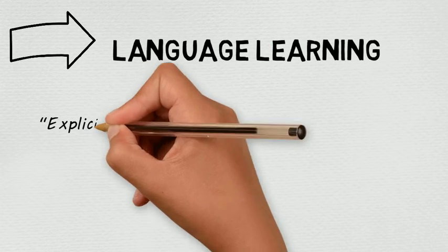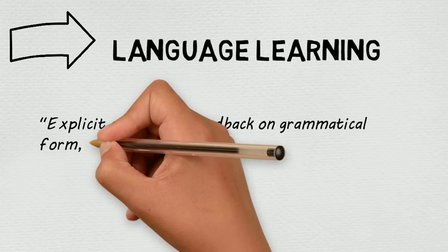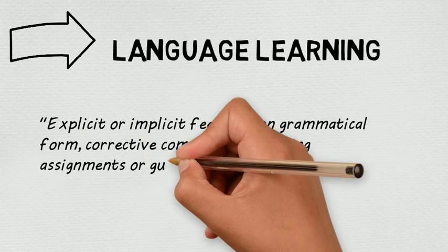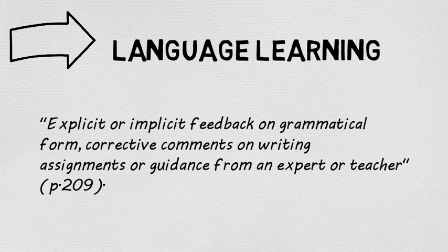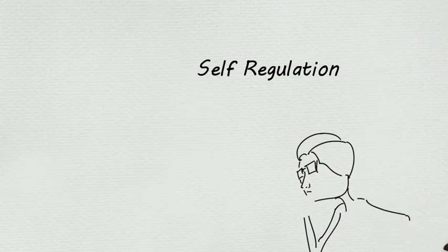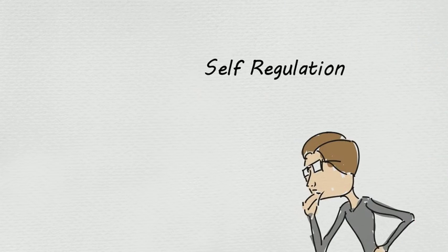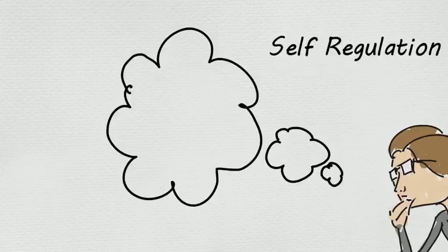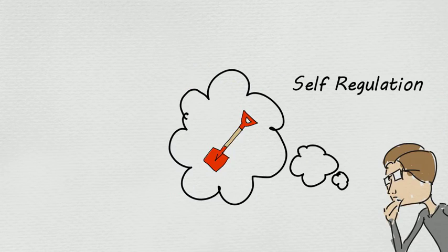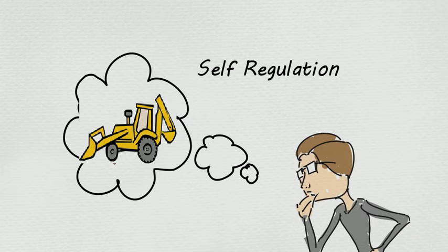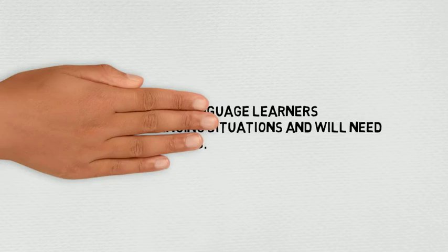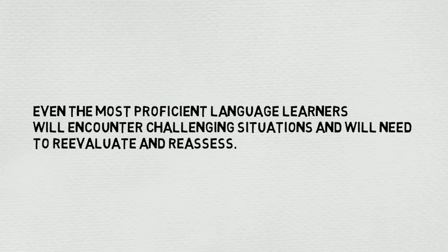When we think about language learning, other regulation can be explicit or implicit feedback on grammatical form, corrective comments on writing assignments, or guidance from an expert or teacher. Self-regulation, then, is just that, the ability of the individual to self-mediate. It's like having control over how one thinks or acts and relying less on external mediation. Self-regulation is not fixed, however. Even the most proficient language learners will encounter challenging situations and will need to reevaluate and reassess.